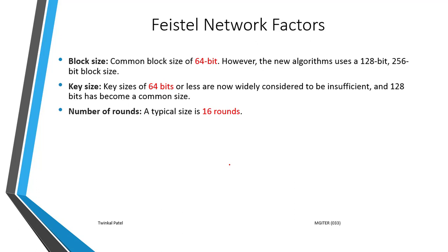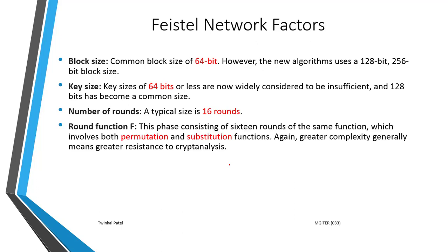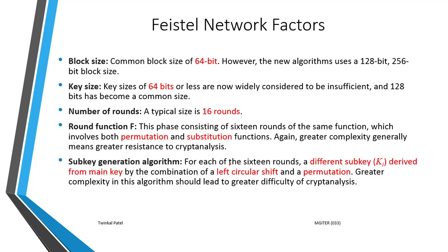The typical number of rounds is 16. The next factor is the round function f: each round has a round function f, and this Feistel structure consists of 16 rounds of the same function, which involves both permutation and substitution. These functions should be complex for greater resistance to cryptanalysis. The next factor is the sub-key generation algorithm: from the main key we derive different sub-keys, and for each of the 16 rounds a different sub-key is derived from the main key by a combination of left circular shift and permutation. This algorithm should also be complex and difficult to resist cryptanalytic attacks.